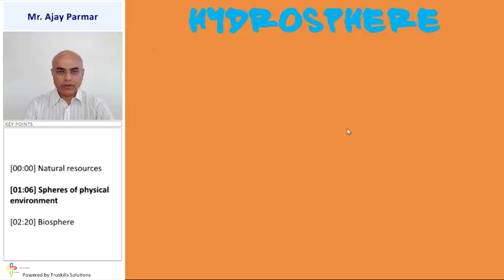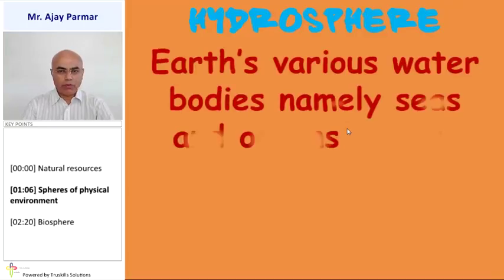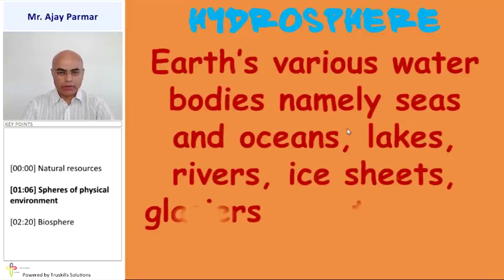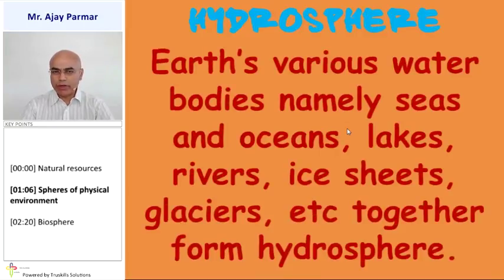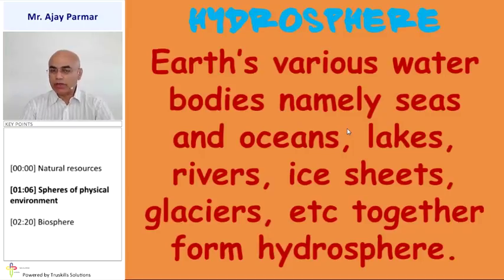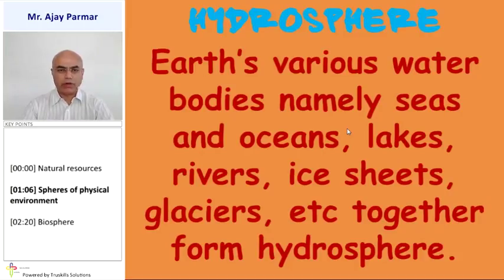Hydrosphere. Whatever the water component — various water bodies found on the surface of the earth — that will include the seas, oceans, lakes, rivers. Even the solid component, that is, ice sheets and glaciers — all these things together constitute to form hydrosphere.